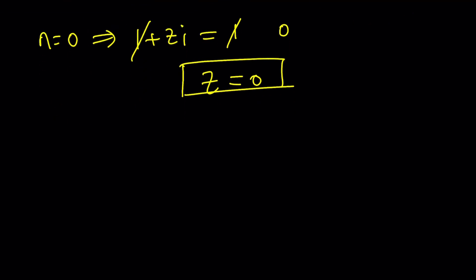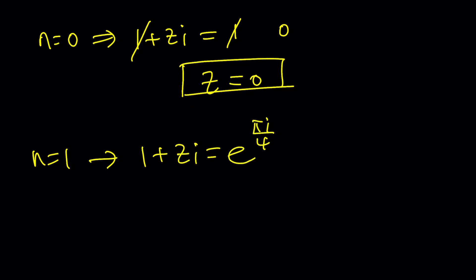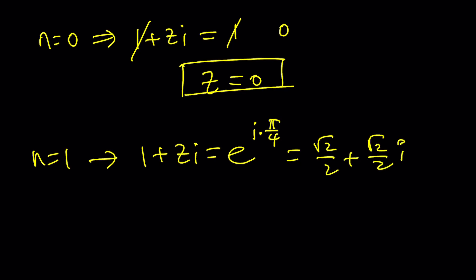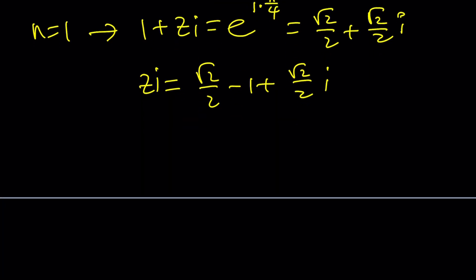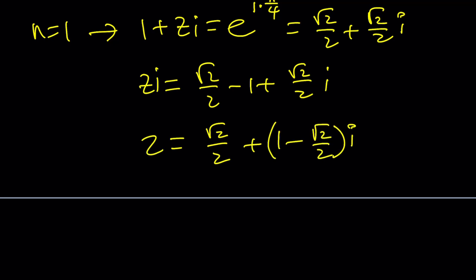Now for the other solutions. If n = 1, then 1 + zi = e^(iπ/4), which equals cos(π/4) + i·sin(π/4) = (√2/2) + (√2/2)i. Subtracting 1 from both sides gives zi = (√2/2 − 1) + (√2/2)i. Then multiply by negative i to isolate Z, giving Z = √2/2·i plus (1 − √2/2). That is the Z value for n = 1.